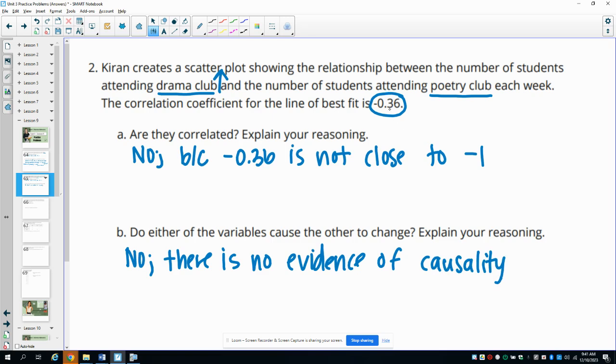So anything to do with this correlation would likely be from something else, just that they happen to be going, that there's nothing else going on. So if one increases, the other does, or if they decrease, maybe there was some other event at school that was more exciting that people decided to go to. But these two don't seem to have any evidence that they caused the other one to go up or down.